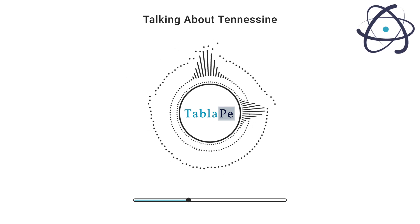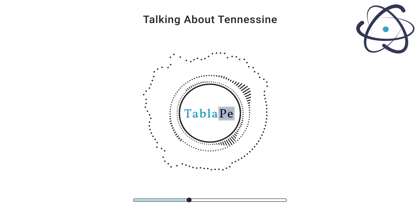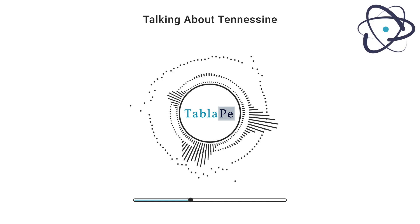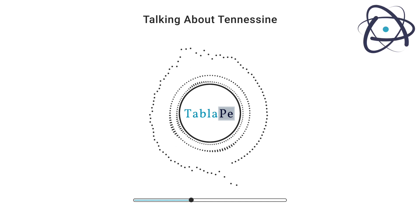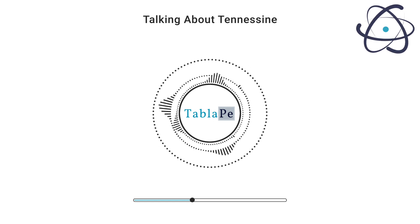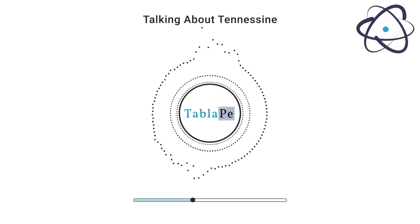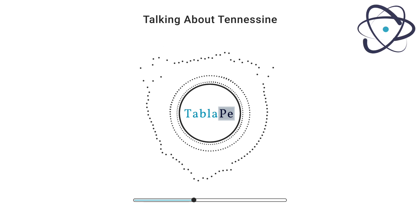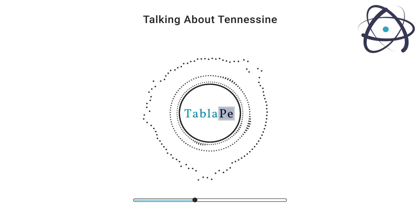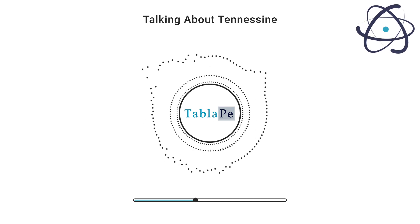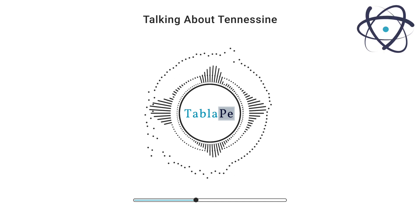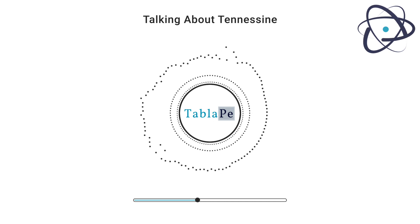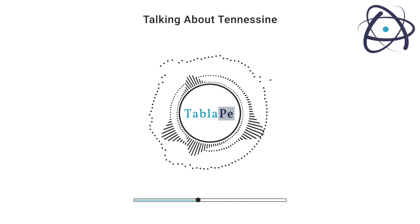Scientists use a target element — often berkelium-249 — and bombard it with accelerated ions, typically calcium-48. This high-energy collision results in the formation of Tennessine atoms, but they exist for an extremely short period before decaying.